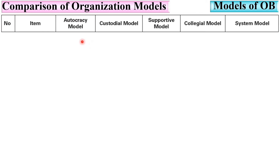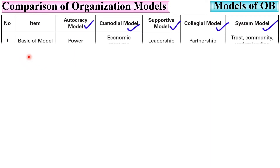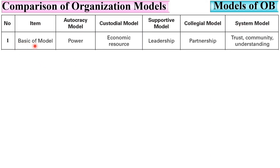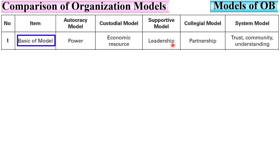Now let us compare all five organizational models. Looking at the basis of each model: autocracy is based on power; custodial model is based on economic resources; supportive model is based on leadership; collegial model is based on partnership or teamwork; and the system model is based on trust, community, and understanding.